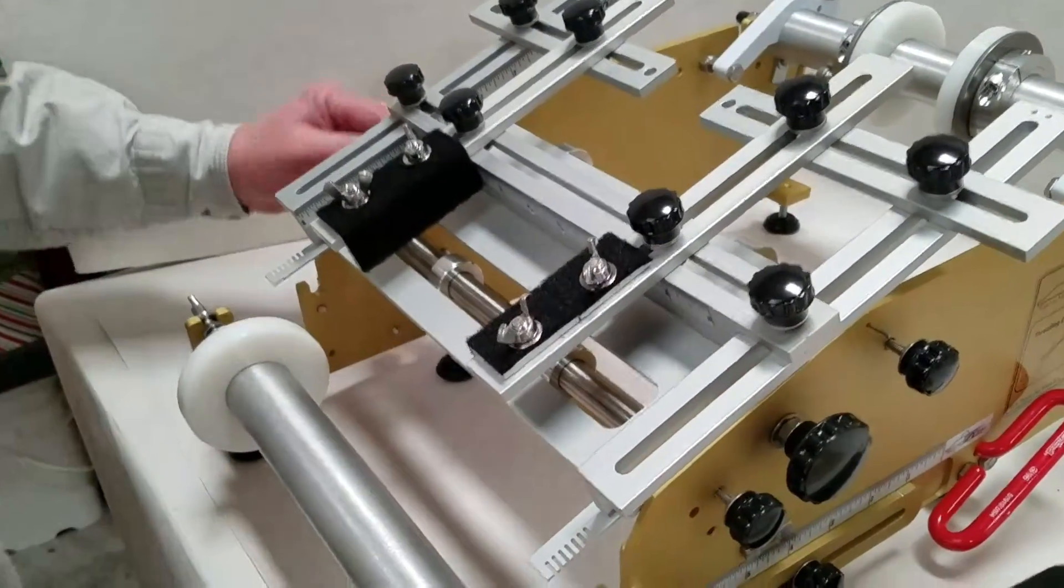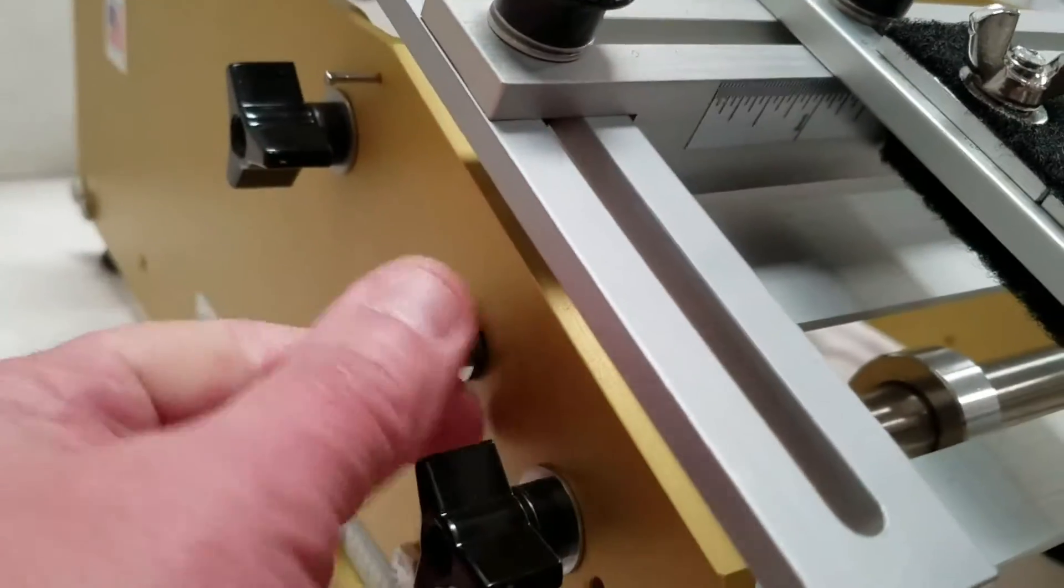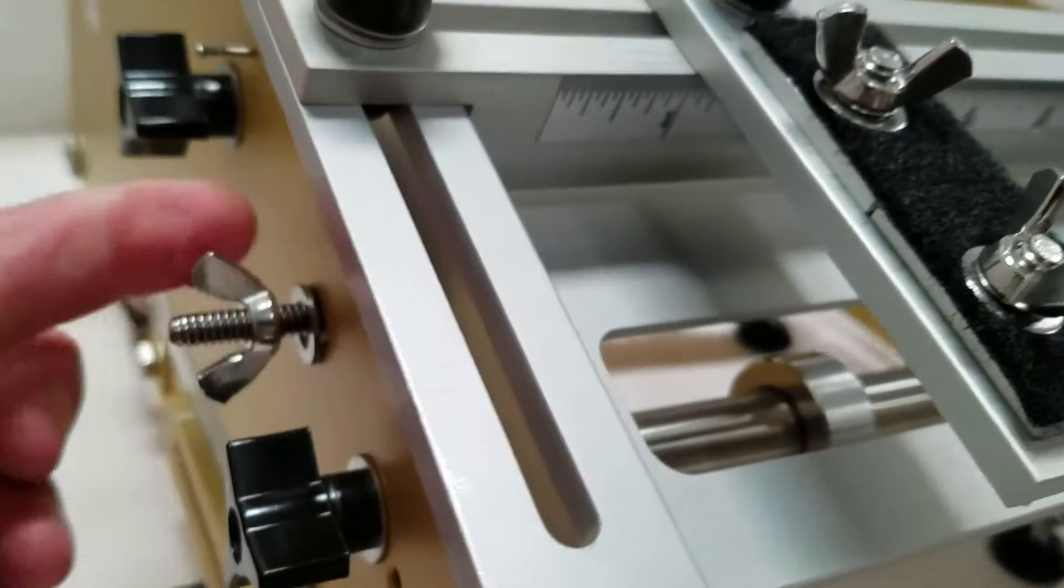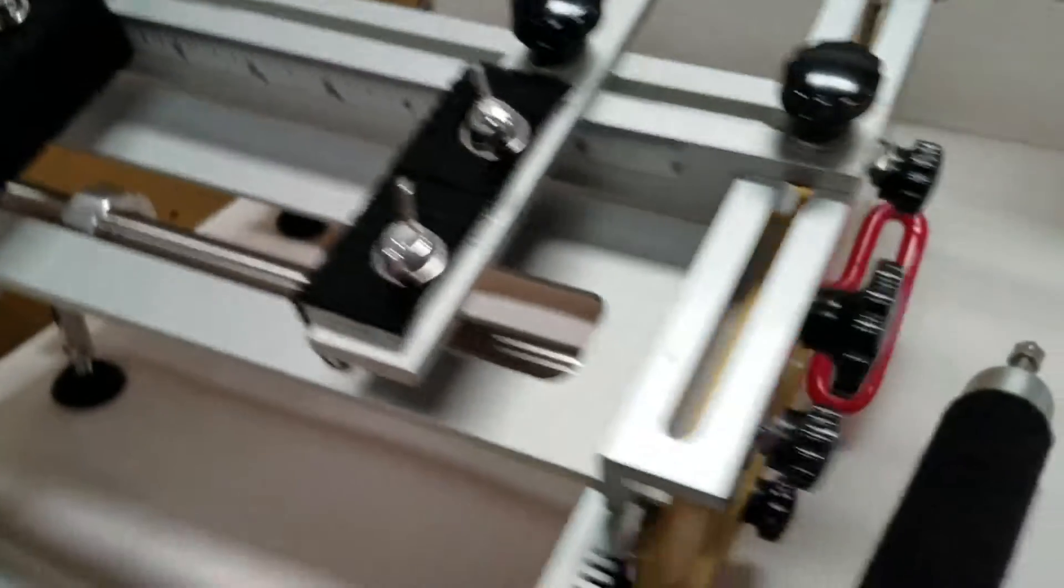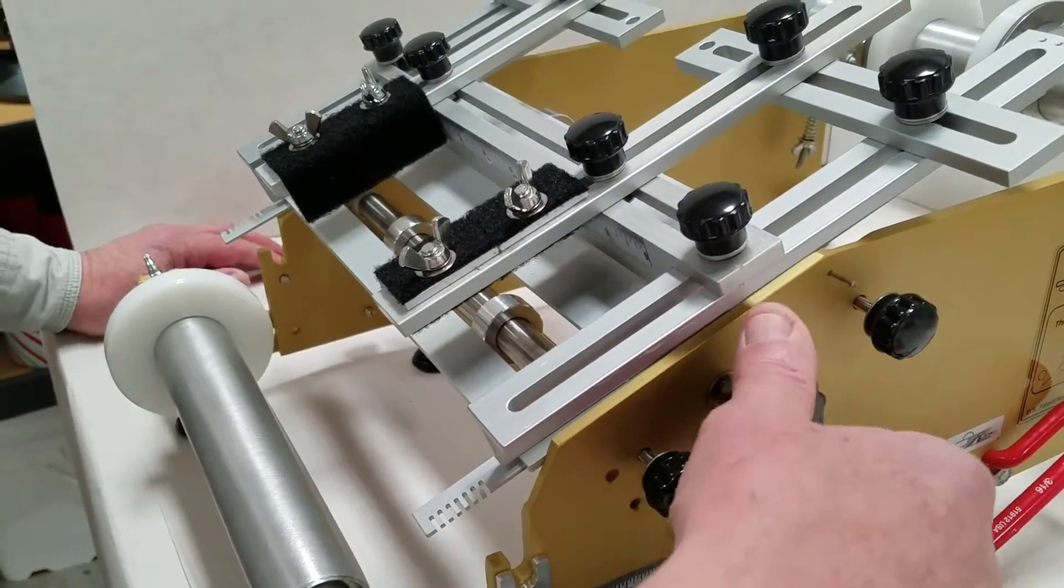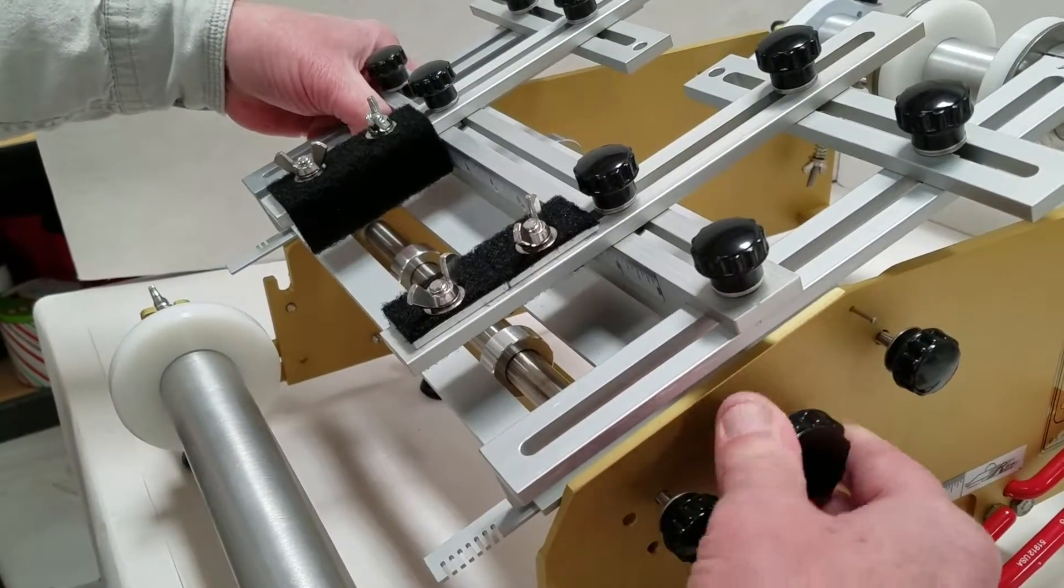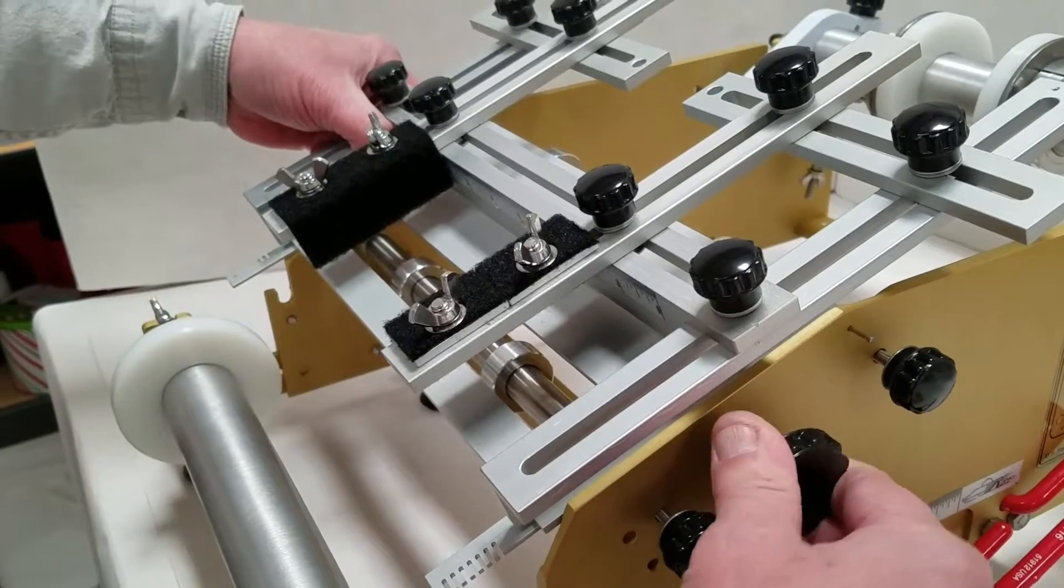You loosen the wing nut on this side and you go over the other side and you turn the big black knob counterclockwise and what it starts to do is spread the frame.